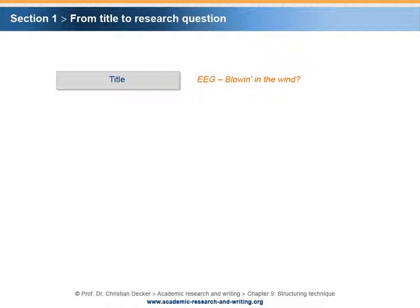The following example shows how this logic is applied. The starting point is the title of the research project. The title of our fictitious research project is EEG – Blown in the Wind. Obviously, this title is short and creative by metaphorically relating to a Bob Dylan song. Therefore, it needs a clarification with respect to the factual topic.